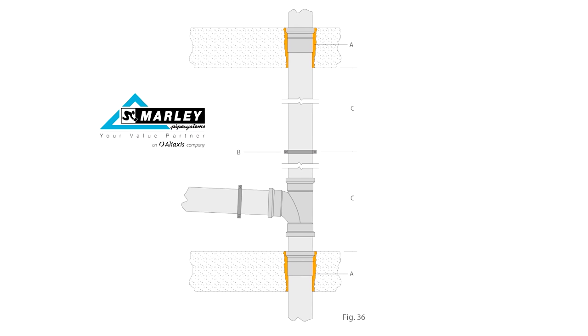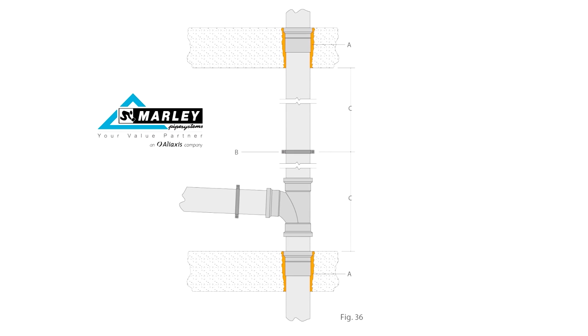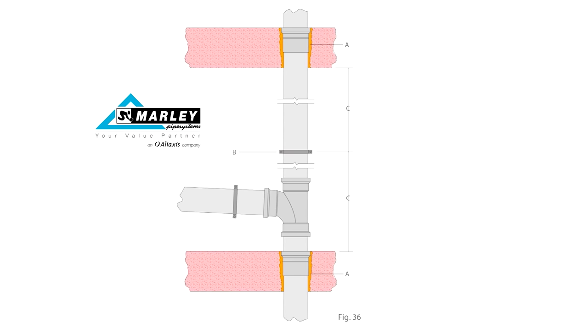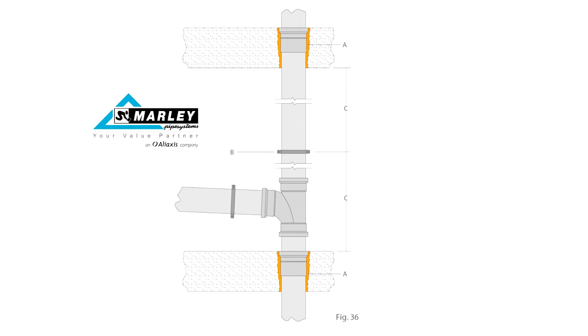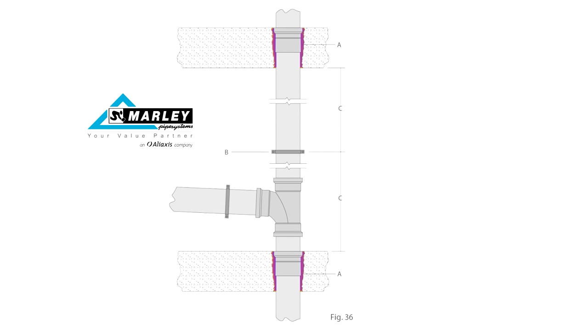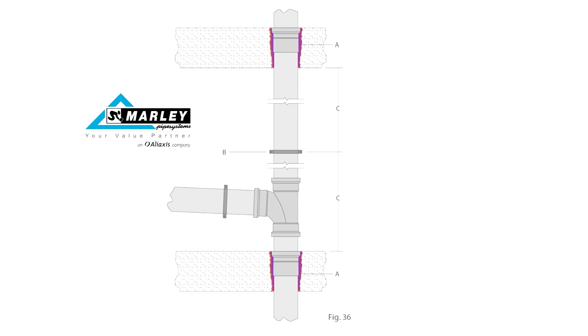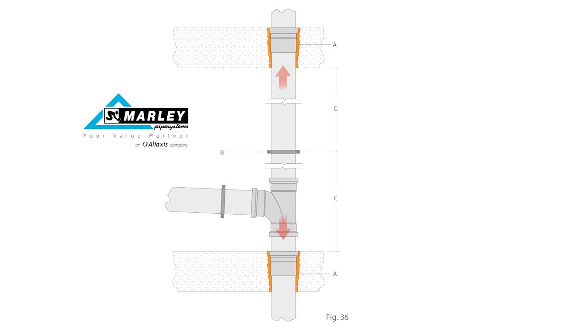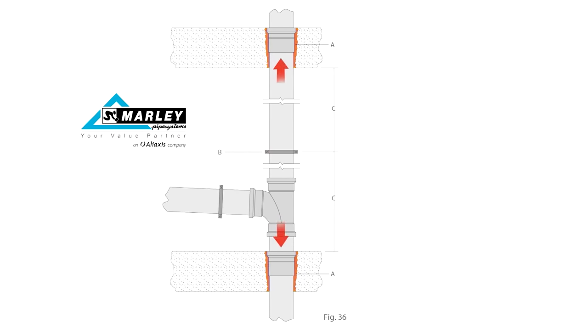In most cases, the socket of a pipe length may be located in a solid floor. In this case, wrap the socket and joint with a layer of building paper and backfill with concrete. This point will now act as an anchor in controlling thermal movement.